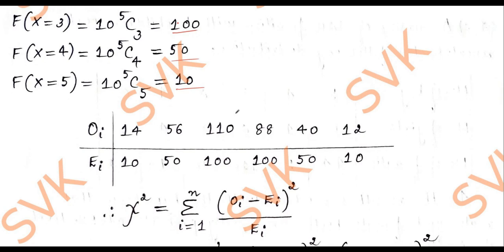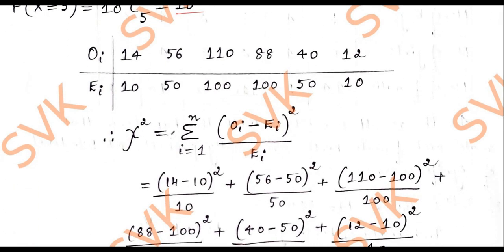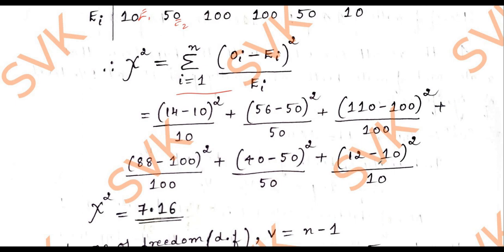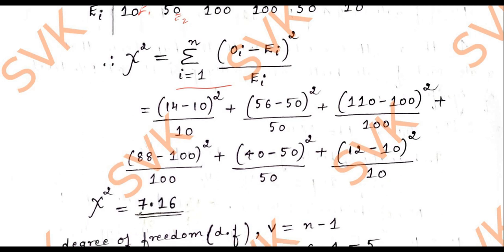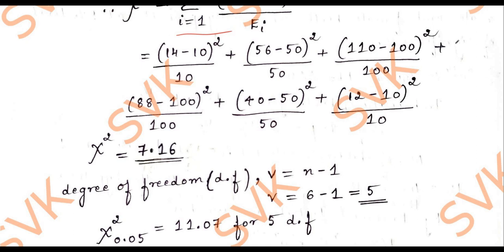We apply the chi-square formula: summation of (Oi - Ei)^2 / Ei for i = 1 to n. Substituting: (14-10)^2/10 + (56-50)^2/50 + ... + (12-10)^2/10. Simplifying this entire expression, we get the chi-square value as 7.16.